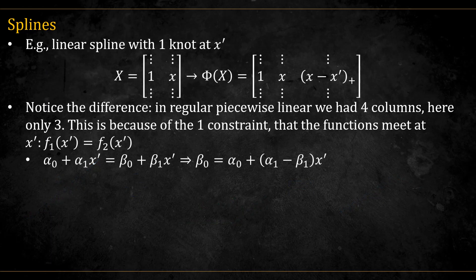So, for a linear spline with one knot, we simply add this extra term to the phi matrix. Notice the difference. In piecewise linear, we needed four columns, two for the different intercepts and two for the different slopes. Here we only need three. This is because of the one constraint we imposed, that the two lines must meet at the knot.